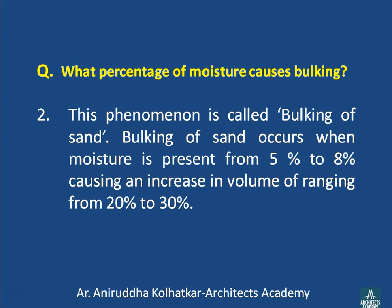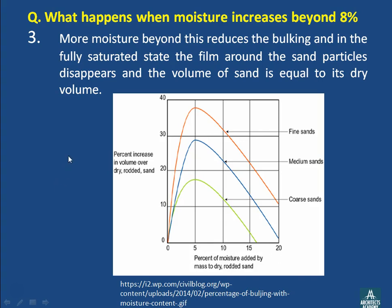Therefore, on the site when sand arrives, we must know whether the sand has bulked or not. When moisture increases beyond 8 percent, more moisture reduces the bulking. In the fully saturated state, the film around the sand particles disappears and the volume of sand equals its dry volume. So there is a very small range between 5 to 8 percent in which bulking occurs, and beyond 8 percent the volume again starts reducing to its original volume.